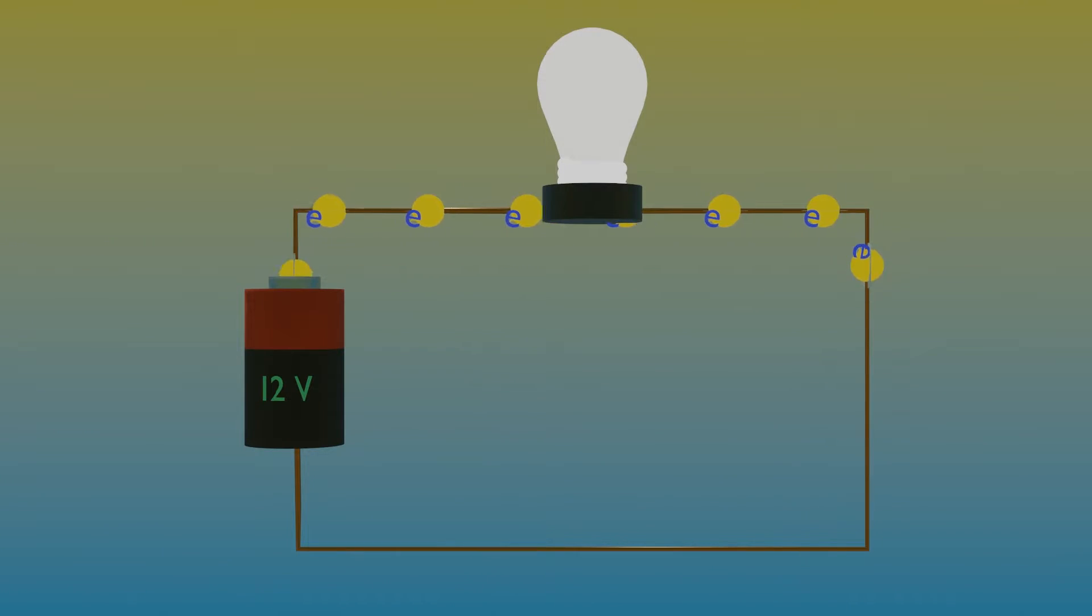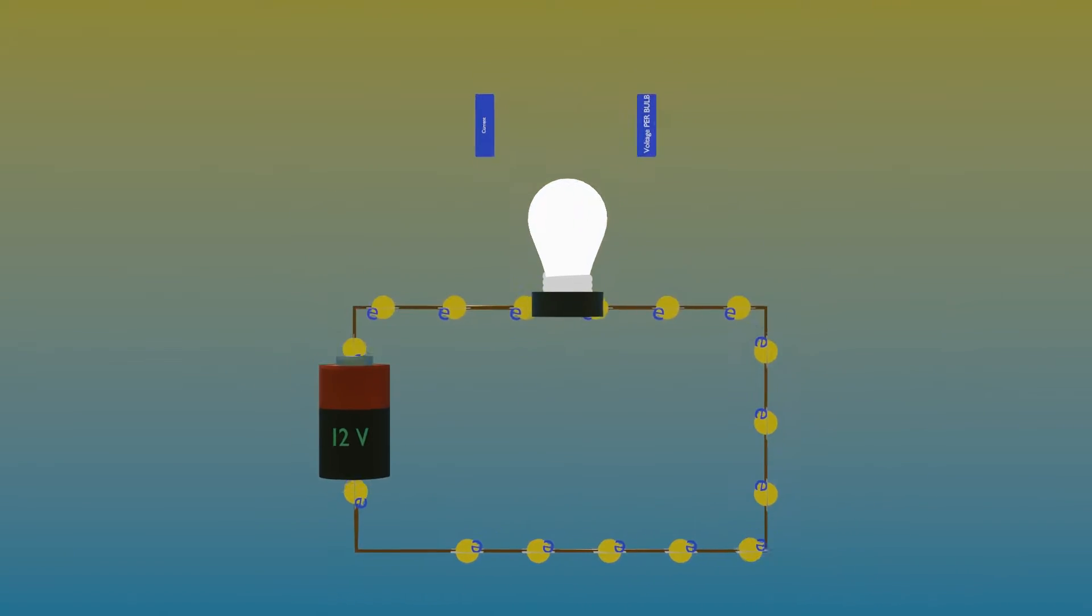A bulb's brightness is directly proportional to the electrical power, so the brightness of each bulb in a circuit depends on the current and voltage in the circuit.